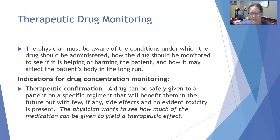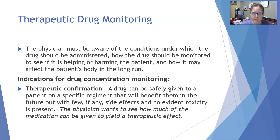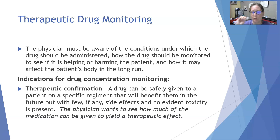There are also cases where the physician might need to perform liver function tests to make sure the medicine is not adversely affecting the liver, or renal function tests to ensure the drug is not adversely affecting the kidneys. The first indication for drug concentration monitoring is therapeutic confirmation — a drug can be safely given to a patient on a specific regimen that will benefit them with few side effects and no evident toxicity. The physician wants to confirm that the dosage is indeed getting the patient into therapeutic levels and having a therapeutic effect.